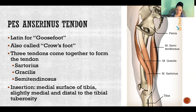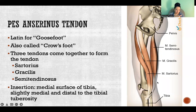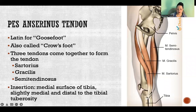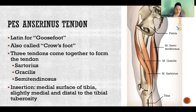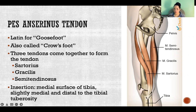The pes anserinus tendon refers to the tendon on the medial side of the knee, where three muscles come together and their tendons combine to form the pes anserinus tendon, inserting together on the medial side of the proximal tibia. The muscles that come together are sartorius, gracilis, and semitendinosus, and they collectively insert on the medial surface of the tibia, just medial and distal to the tibial tuberosity.